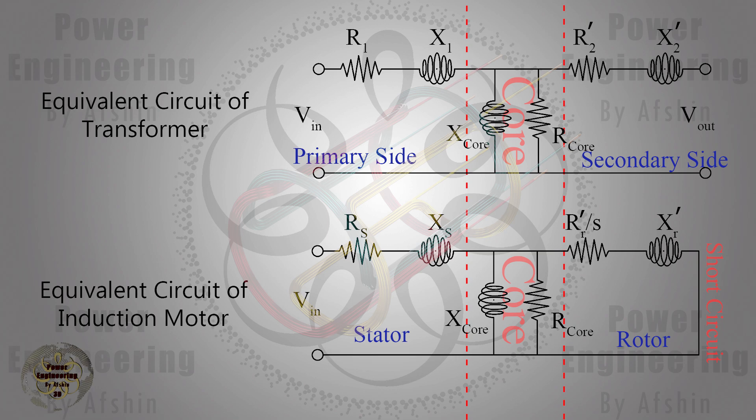A key difference between a transformer and an induction machine is that the rotor or secondary side in an induction machine is short-circuited.